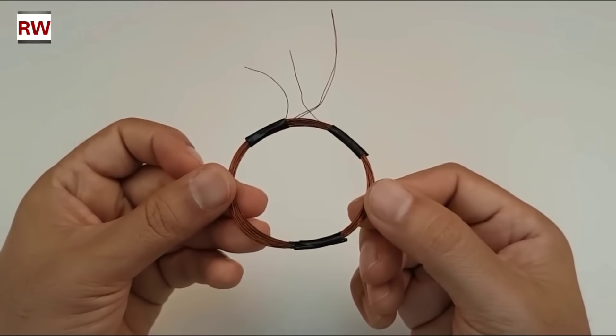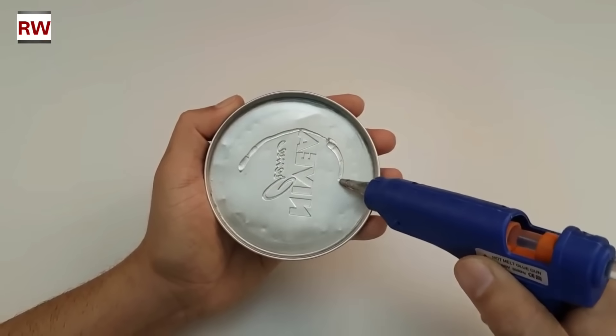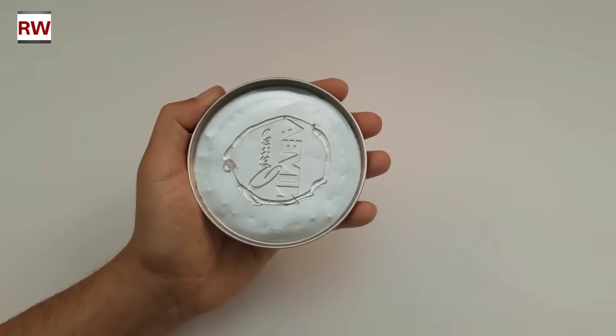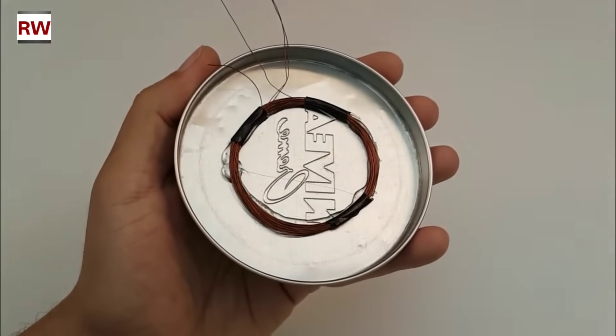After completing the taping, we need to bring a small cream box, which you can easily find at any local shop. On this box, we will attach our coil using a glue gun, just as you're seeing in the video. This will hold the coil firmly in place and give our setup a neat and secure base.